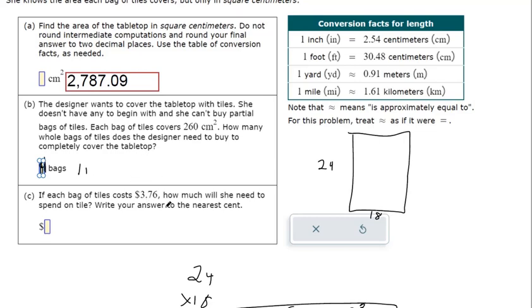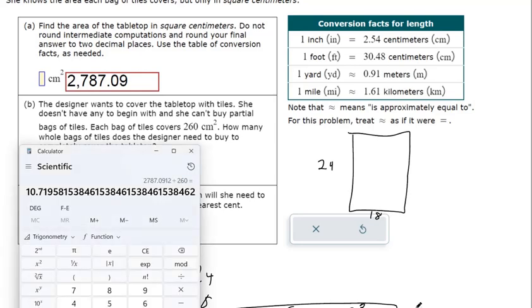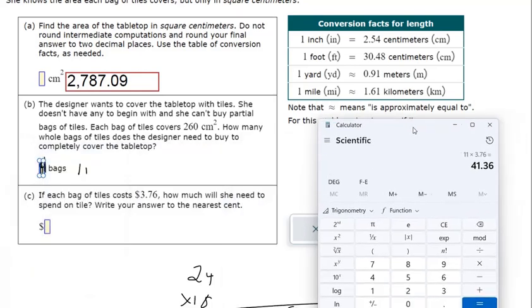If each bag costs $3.76, how much does she need? There's 11 bags. They're each $3.76. $41.36 is how much they'll need.